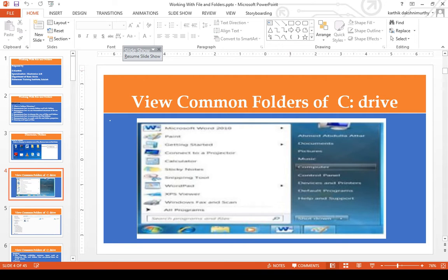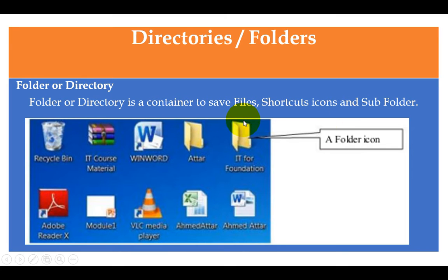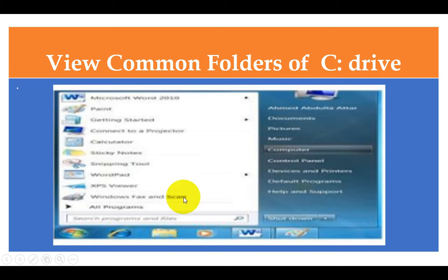Now we will see how to view the folders of C drive. Usually the C drive is the place where we install our operating system. If you want to explore and see all the files in your C drive, go to the Start button and go to My Computer.